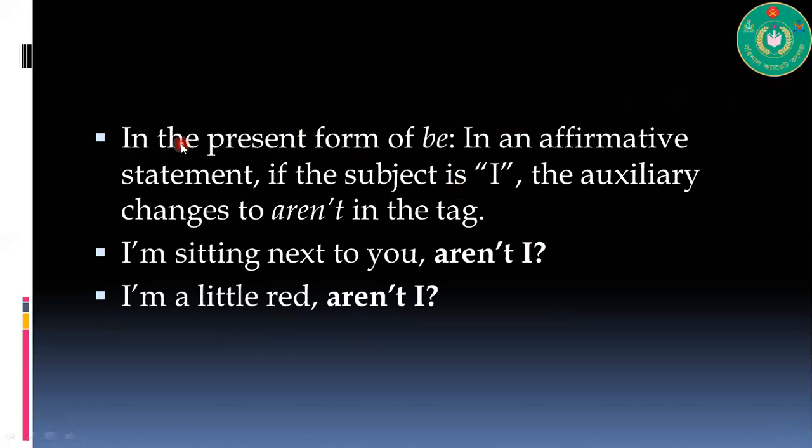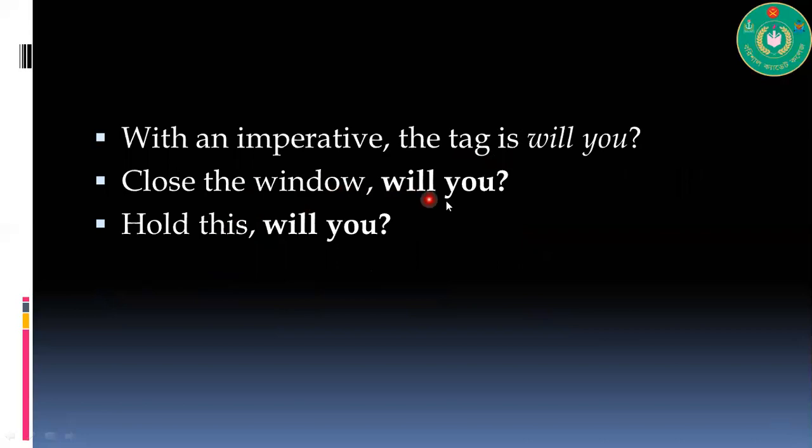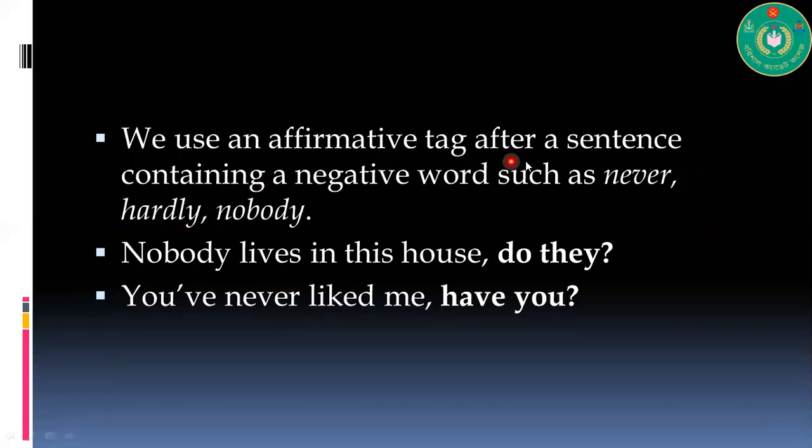Some explanation of the statement in the present form of 'be': in an affirmative statement, if the subject is 'I', the auxiliary changes to 'aren't' in the tag, which we talked about earlier. I'm sitting next to you, aren't I? With 'let's', the tag is 'shall we'. Let's go to the beach, shall we? Let's have a coffee, shall we? Tag with 'will you': Close the window, will you? Hold this, will you? Remember these examples.